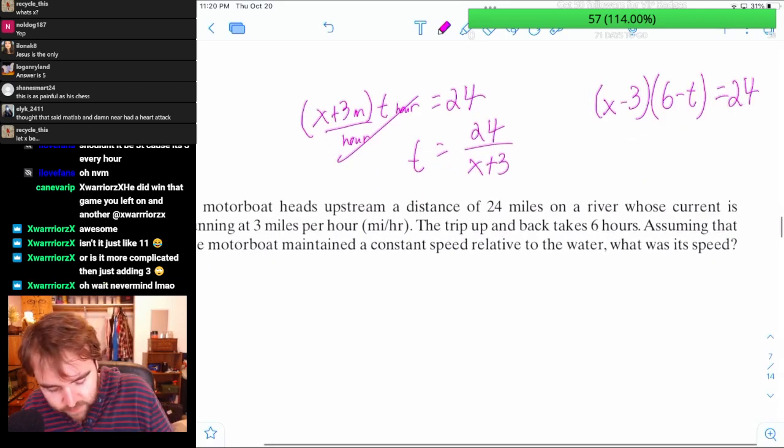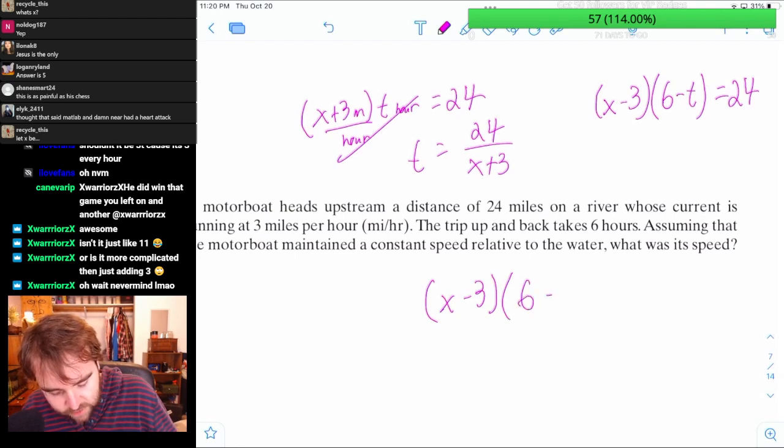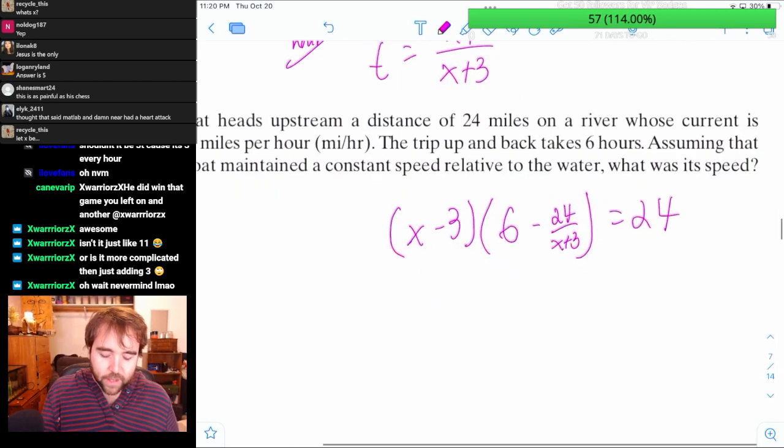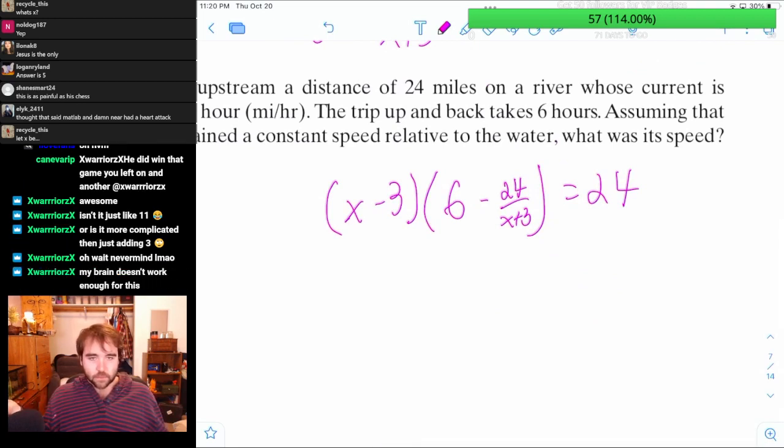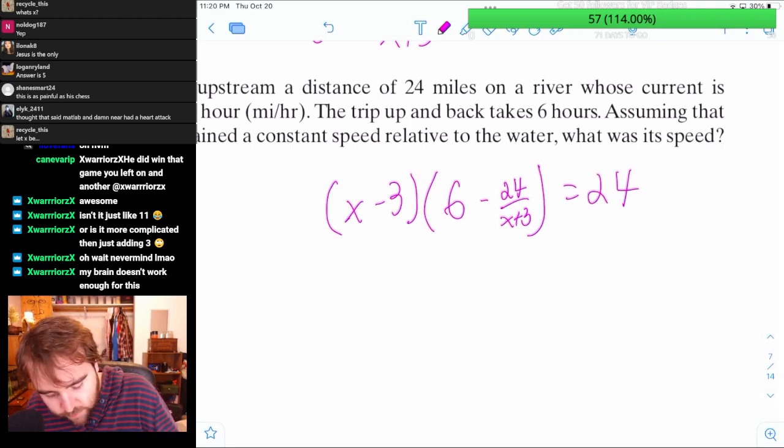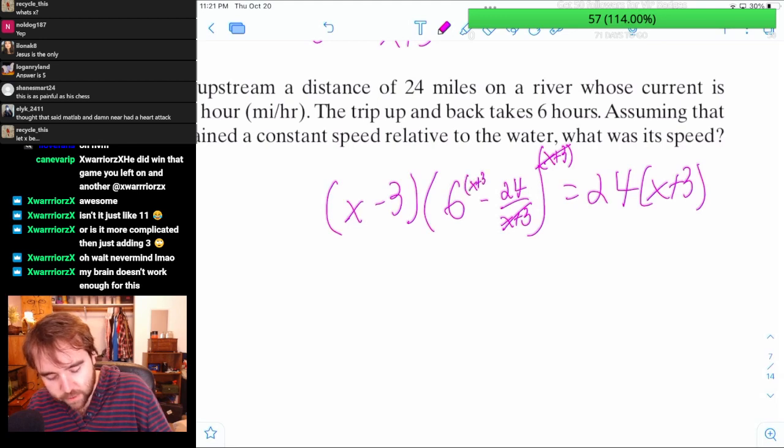The problem is, I think that's pretty similar to things I've already done. But X minus 3 times 6 minus 24 over X plus 3 equals 24. I mean this should be fine, right? It's an equation for X. So we've just got to solve for X. What I'm tempted to do is multiply both sides by X plus 3, because if I multiply this by X plus 3, it cancels this but then leaves that there.